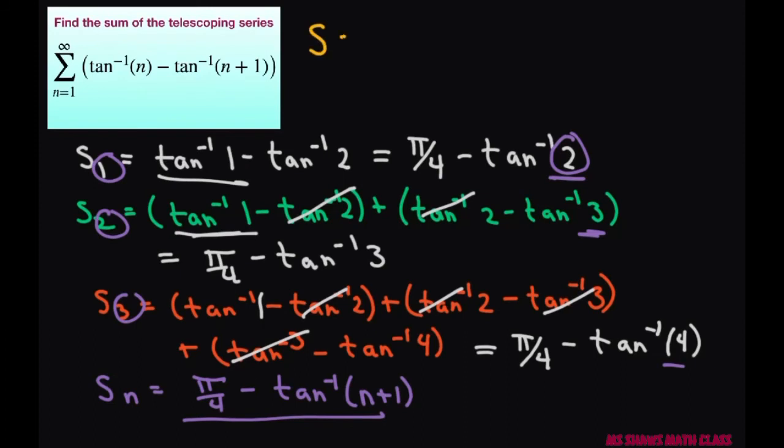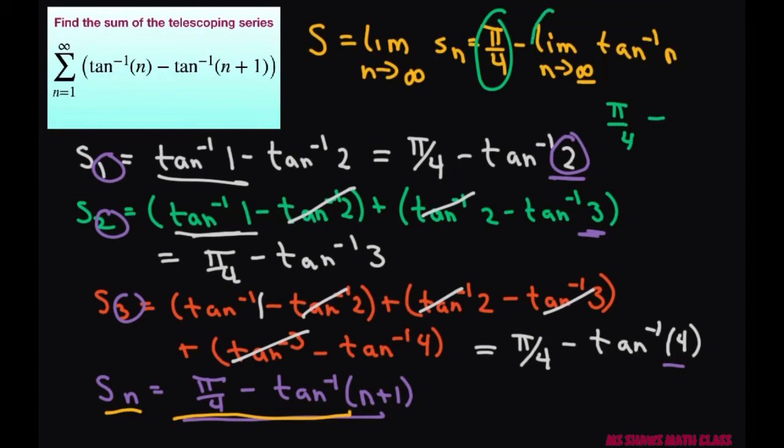Now to find our sum, our sum is going to equal the limit as n approaches infinity of s sub n. So that's going to give you pi divided by 4 minus the limit as n approaches infinity of inverse tan of n. Well, as inverse tan goes off to infinity, that's going to be pi divided by 2. So what this ends up being is pi divided by 4, which we already have, and this minus this part here goes off to pi divided by 2. So your answer is going to be this equals negative pi divided by 4 is your sum. So that equals your s.